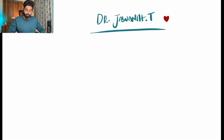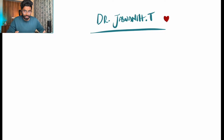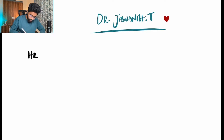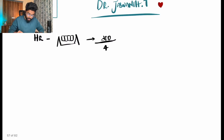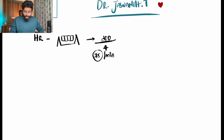Whenever someone gives you an ECG, the first thing is don't panic. The first point anyone will ask is heart rate. We calculate it as 300 divided by the number of large boxes between two R-R waves. Here I have drawn it as four, so we say 75. But did anyone think about why we use 300 and not 500?